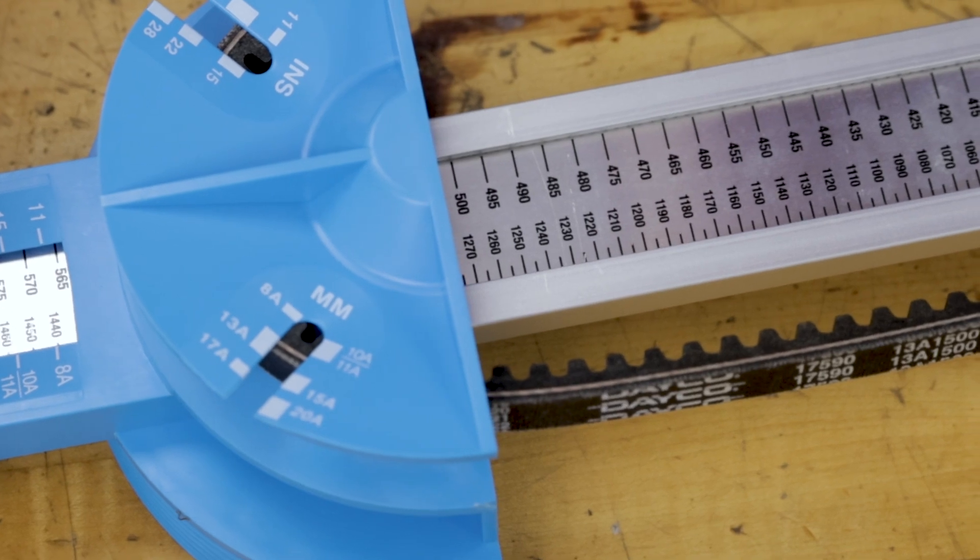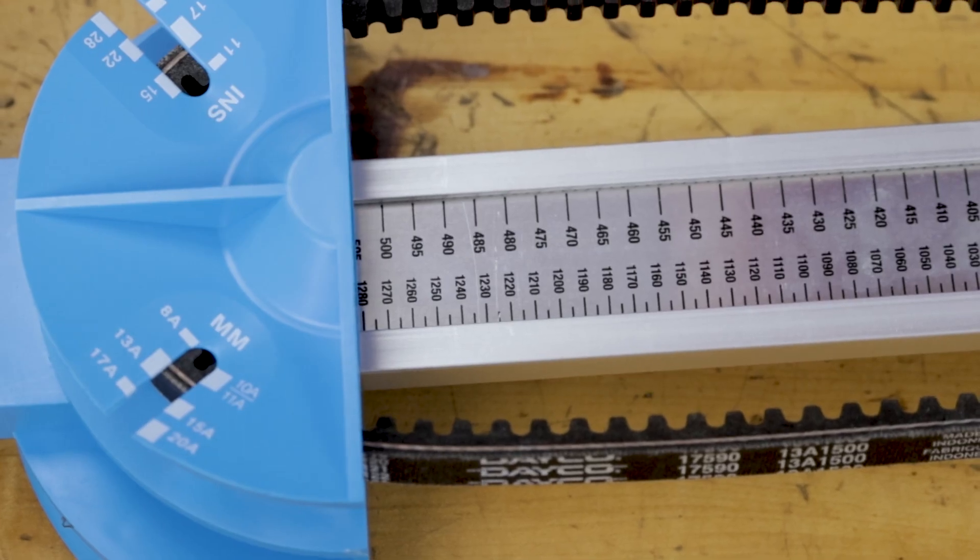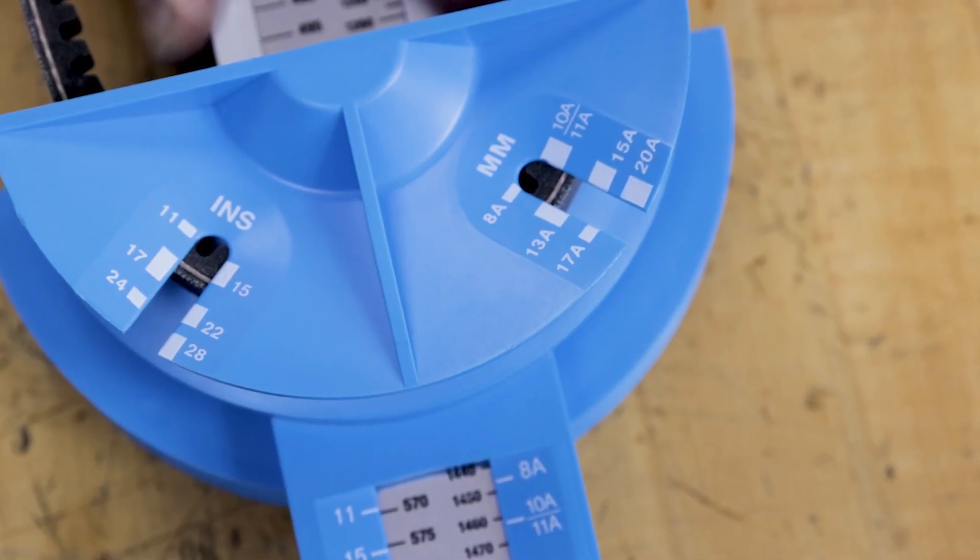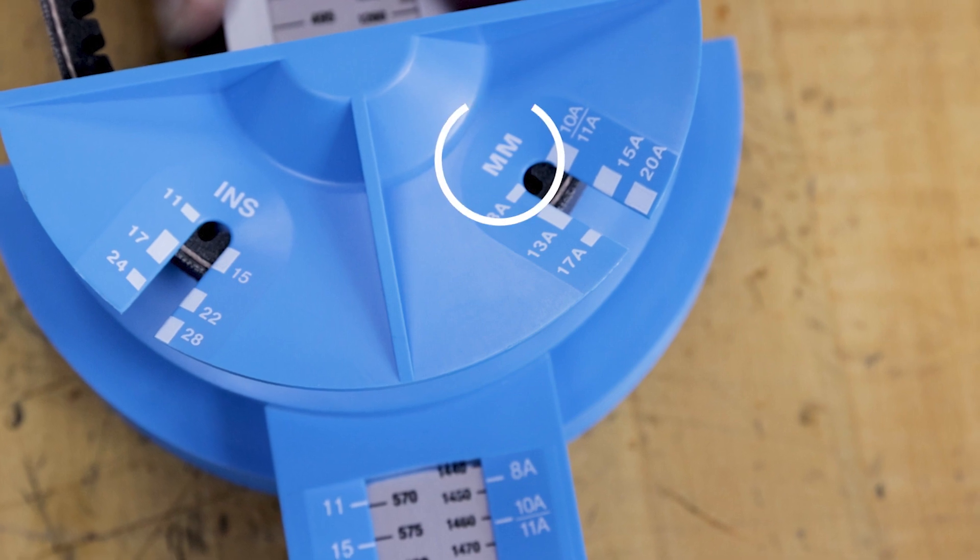With the belt pulled tight, notice the top of the belt in both the inches and metric cutout. Make note of what white block the top of the belt falls within. These numbers serve as inch and metric profiles of the belt.